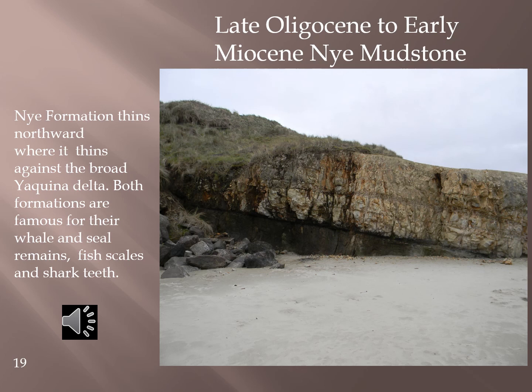The Late Oligocene to Early Miocene Nye Formation crops out further to the west and is found along the shoreline from Nye Beach and Agate Beach to Umpqua Head. The Nye Formation is a dark olive-gray organic-rich marine mudstone and siltstone that contains sandy siltstone and very fine-grained sandstone in the upper and lower sections. Dolomitic and calcareous concretions up to one-half meter in size and lenticular beds are found locally. The general coarsening upward sequence indicates a regressive sequence of falling sea level. This outcrop of the Nye Formation is found at the Vietnam Veterans Memorial at Nye Beach.